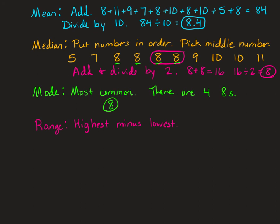And then the range is the highest number minus the lowest number. We've already got the highest number when we put them in order. It was that 11, and the lowest number was 5. So we just subtract those, 11 minus 5, and we get 6 for the range.